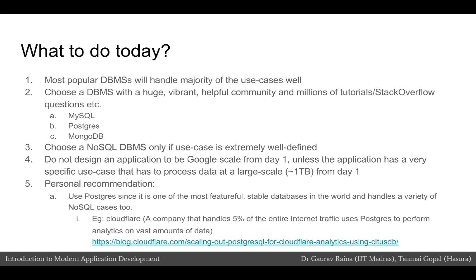If you have a database size less than one terabyte and you are a typical web application, there will almost be no difference between using MongoDB, MySQL, or PostgreSQL. When choosing a DBMS, the most important thing is to choose one with a huge and vibrant community — preferably one with several tutorials and Stack Overflow questions and answers — so that all the different use cases you want to achieve are already solved and answered with an open community around it. Databases with some of the best communities are MySQL, Postgres, and MongoDB.